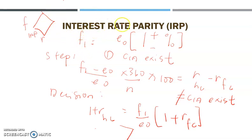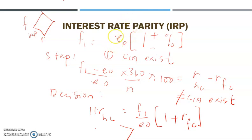We continue with the interest rate parity. Same like a parity — there are only two parities that you need to come out with decisions: where to borrow and where to invest. The first one is under the international Fisher effect and the second one is under interest rate parity. We ended the international Fisher effect on the previous slide; this one we need to come out with a decision under international parity.